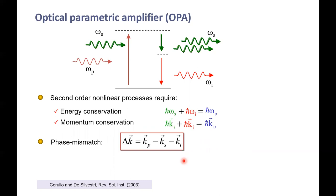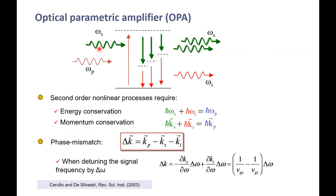As with any other second-order nonlinear process, OPA requires energy conservation and momentum conservation (phase matching). The phase mismatch Δk must equal zero. But we are not interested in monochromatic waves — we want to deal with ultrashort pulses. Considering the pump as monochromatic and the signal as broadband (containing many frequencies), I need to satisfy Δk = 0 for all these wave vectors. Evaluating the phase mismatch by detuning the signal by Δω, and noting that the pump derivative is zero (monochromatic), I end up with an expression involving the derivatives of the wave vectors for signal and idler — which are the inverse group velocities.